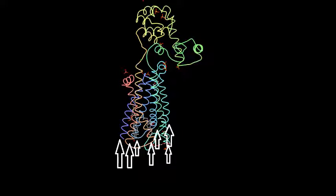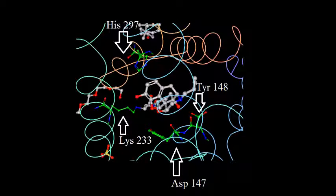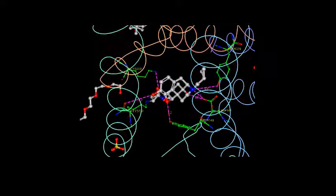Her most important features include her seven alpha helices and her transmembrane hydrophobic regions. Her binding pocket includes aspartate 147, trirosine 148, histidine 297, and lysine 233. Aspartate 147 forms an ionic bond with the substrate, and the others typically form hydrogen bonds.